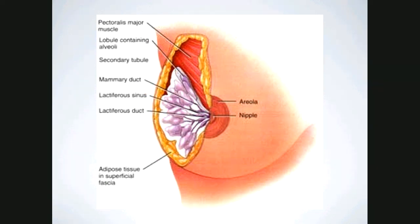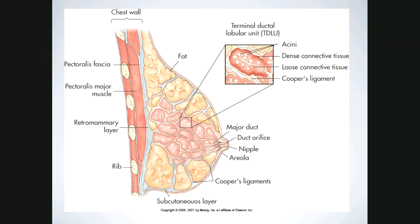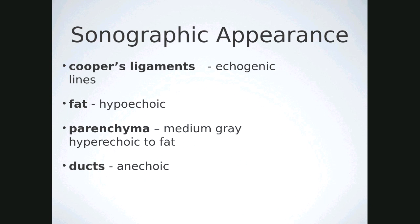You can see the TDLUs here. Sonographically, Cooper's ligaments are very echogenic bright bands coursing through the breast. Fat is hypoechoic — and as we discussed in abdomen two, gain settings should be set to fat because it doesn't change functionally. The parenchymal tissue is usually medium gray, a bit brighter than fat, but over time becomes fatty replaced and isoechoic to fat. So set your gain settings to fat. Lactiferous ducts are anechoic and tubular, taking a course towards the nipple.